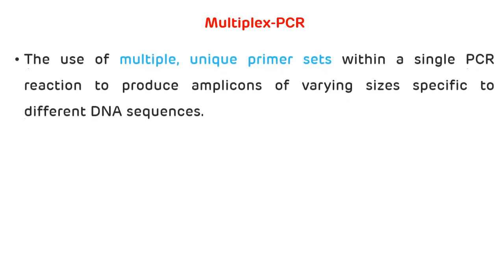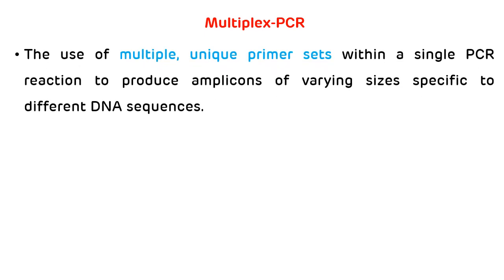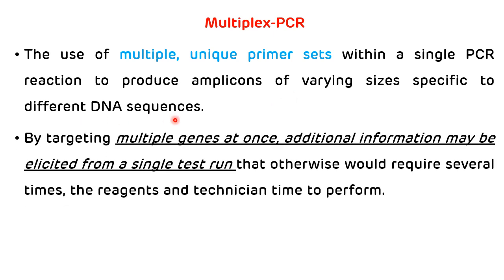Another type of PCR is multiplex PCR. It uses multiple unique primer sets within a single PCR reaction to produce amplicons of varying size specific to different DNA sequences. By targeting multiple genes at once, additional information may be elicited from a single test run that would otherwise require several runs, several reagents, and more time to perform. This is the main advantage of multiplex PCR.